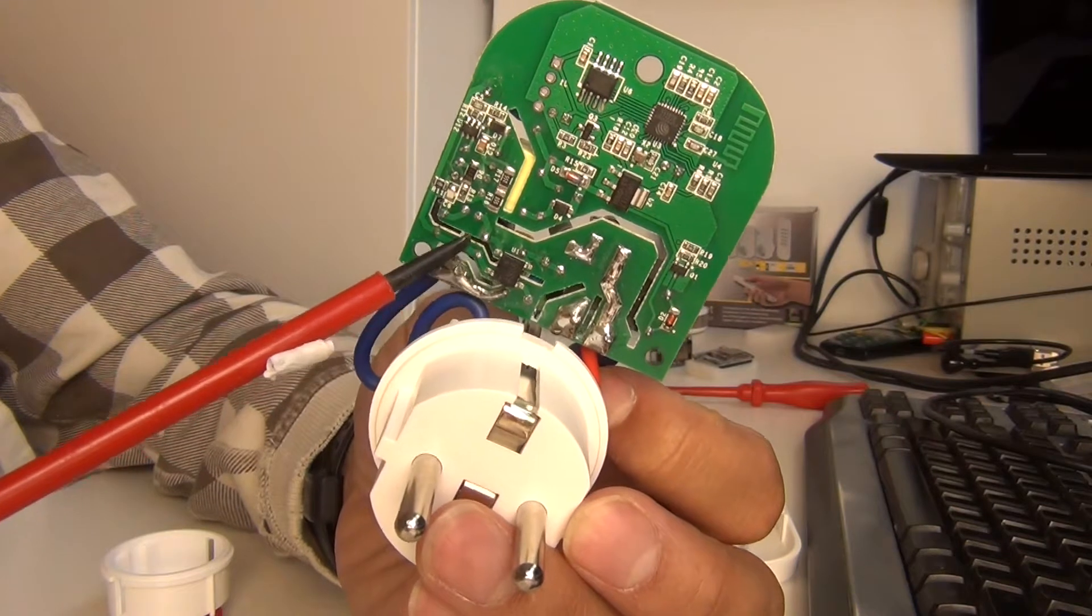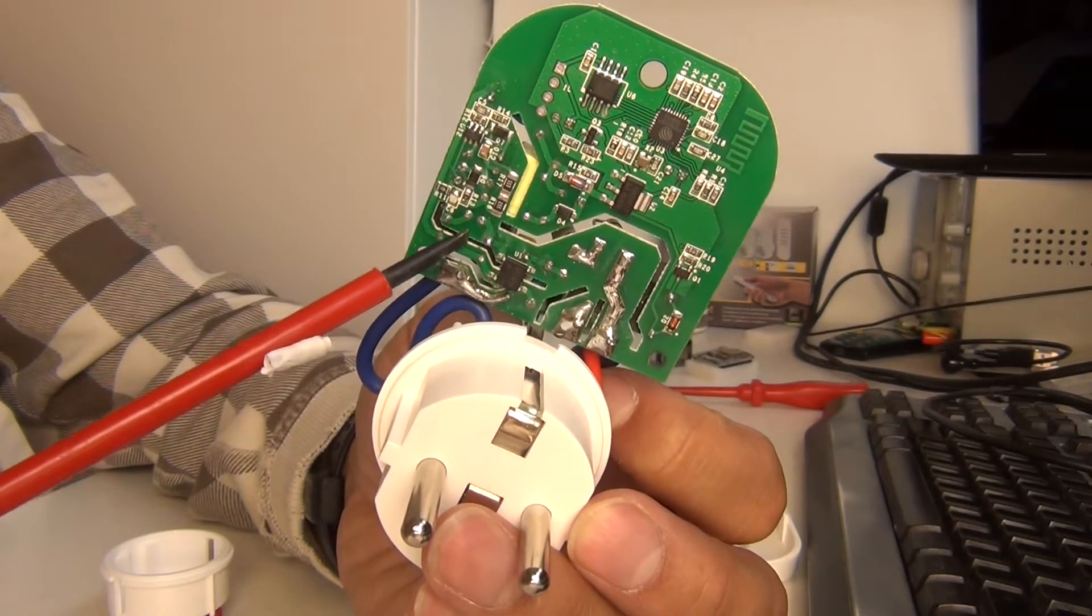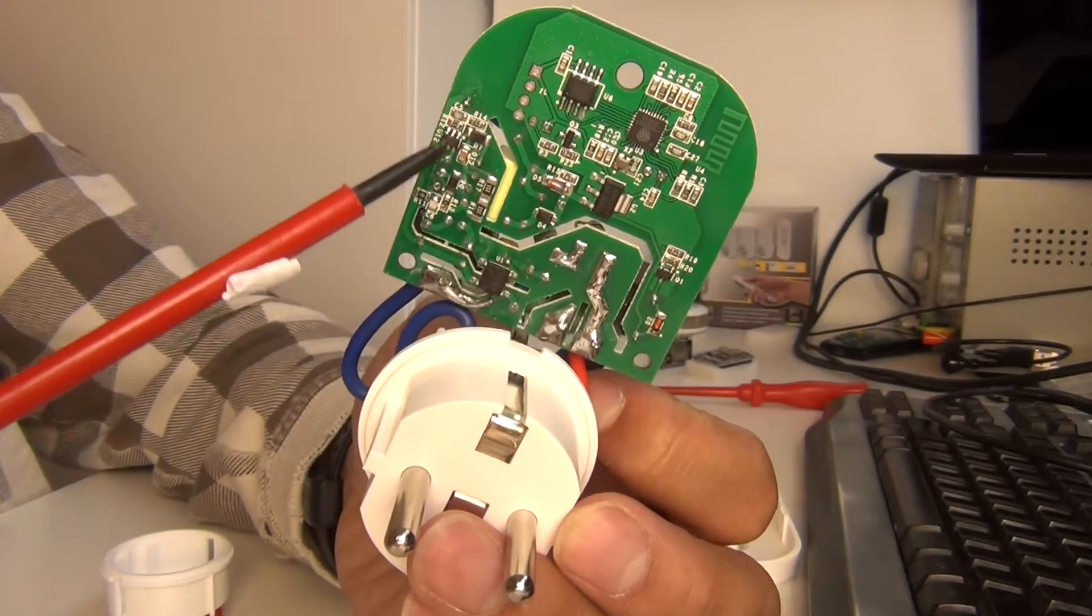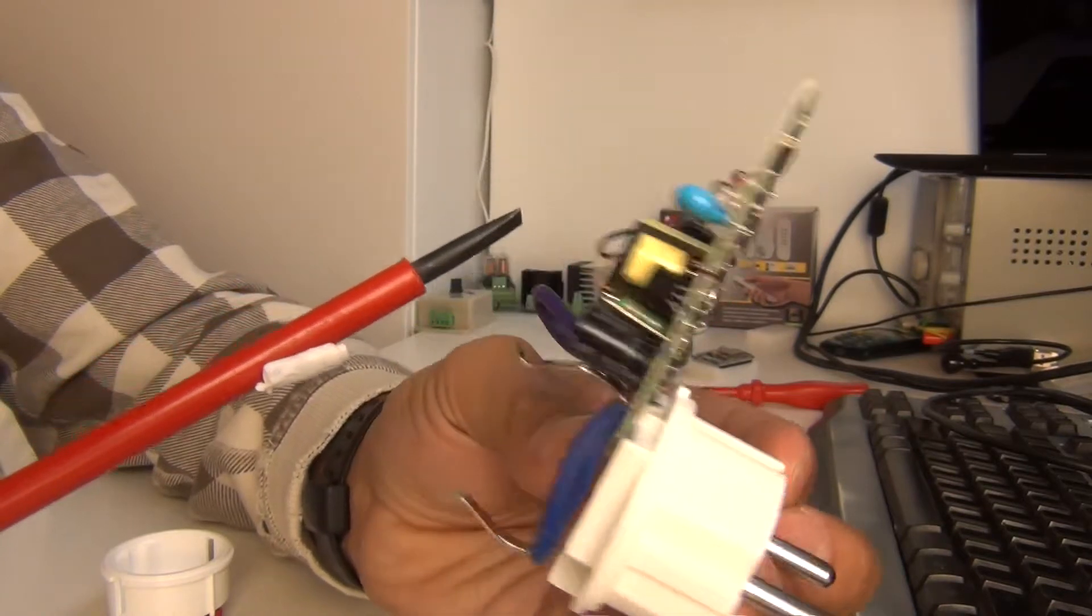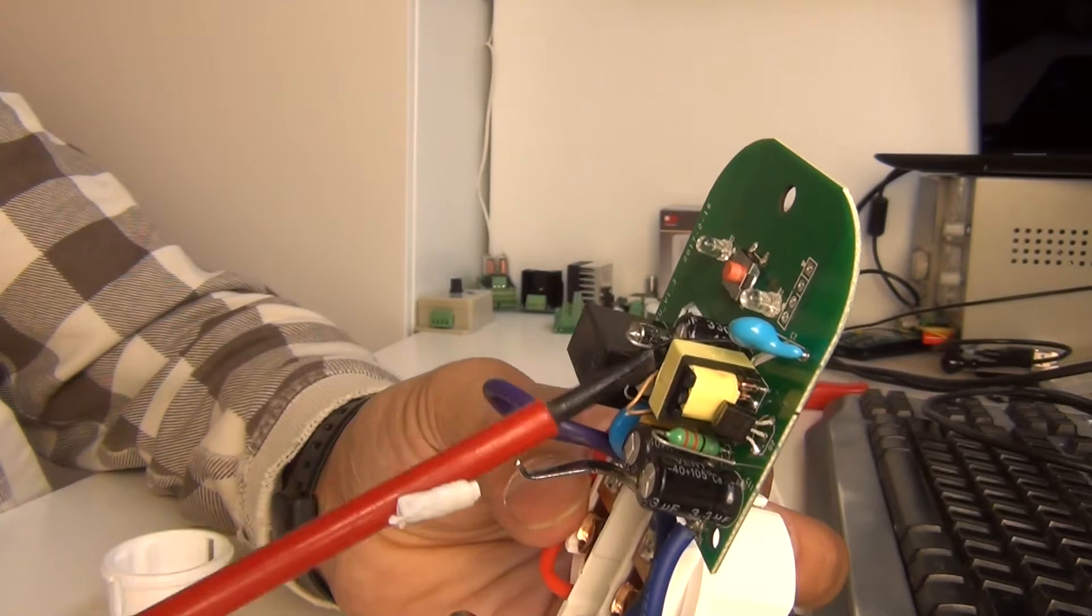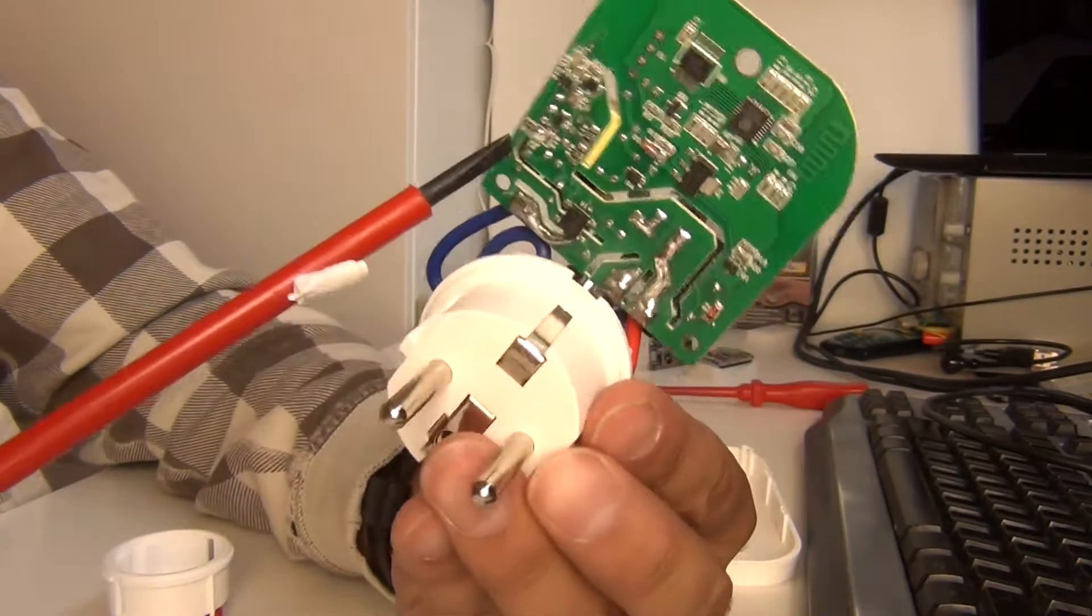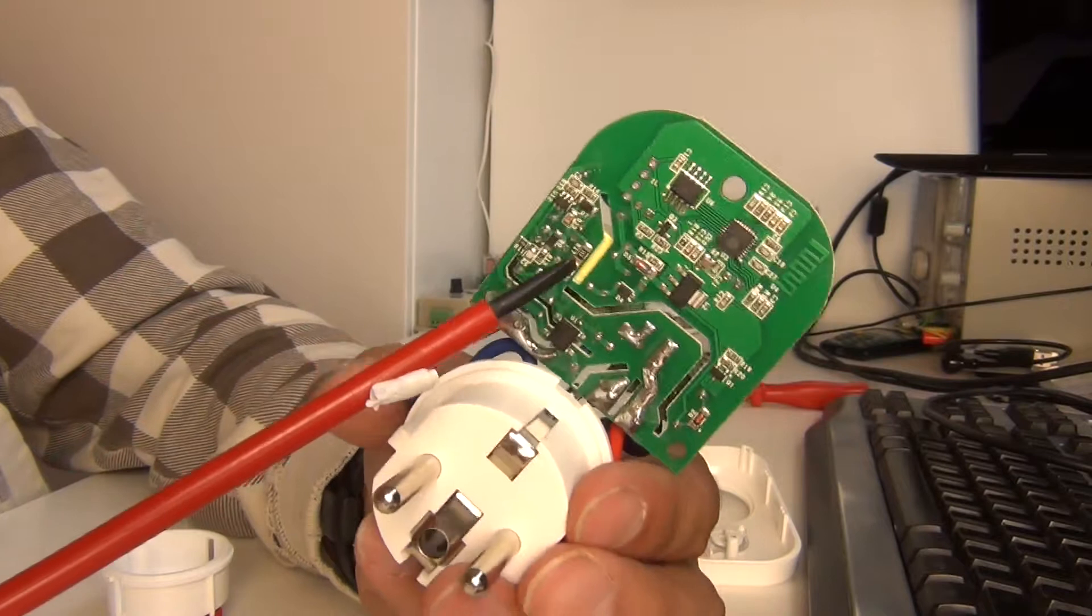This part switches the voltage and brings it to the inductor, and the inductor transforms it to a safe voltage like 5 volts DC or something. I haven't measured yet but I guess it's around 5 volts.